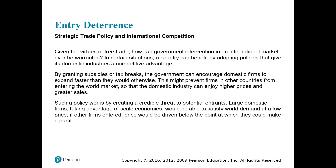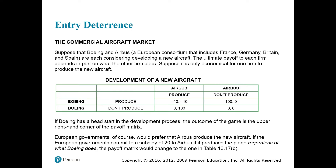We discussed how you can create a strategy where your market operates like an oligopoly and no new firms enter. By creating a credible threat or deterrence — through reputation of irrational or aggressive behavior — you can prevent entry. Regarding strategic trade policy and international competition: given the virtues of free trade, how can government intervention in an international market ever be warranted? In certain situations, a country can benefit by adopting policies that give domestic industries a competitive advantage through subsidies or tax breaks.